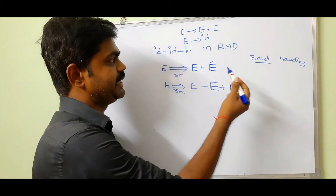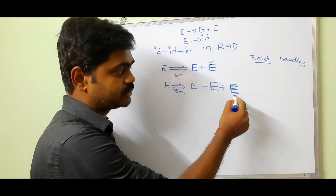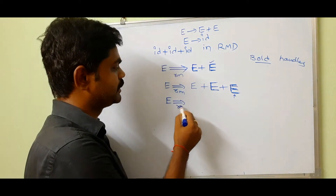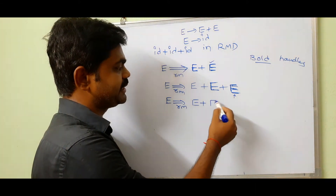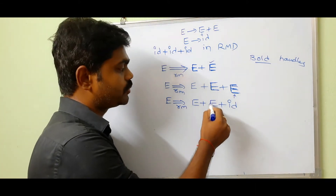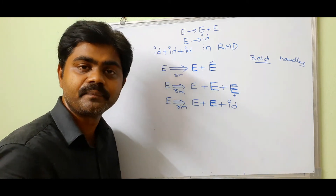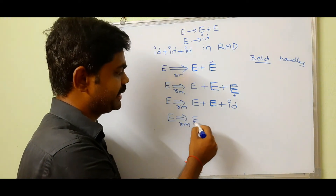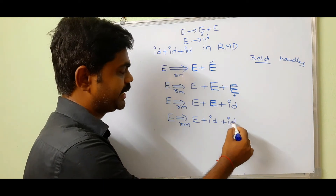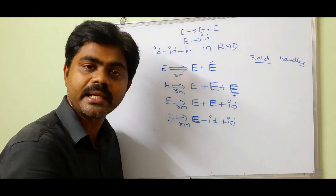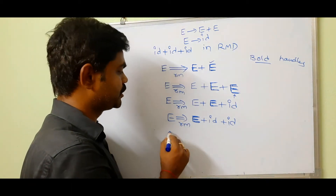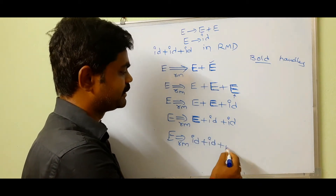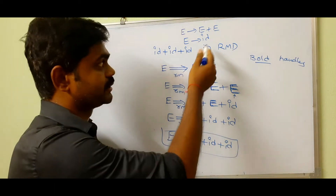Continuing the rightmost derivation, we then substitute ID for the next rightmost E, giving E plus ID plus ID plus ID, making that E bold as our handle. Substituting again, we finally get ID plus ID plus ID. So we have derived our given string through rightmost derivation using handles.